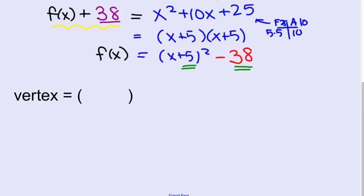To identify that vertex, you always do the opposite, and then the same. That's your critical point. So it's negative 5, negative 38.